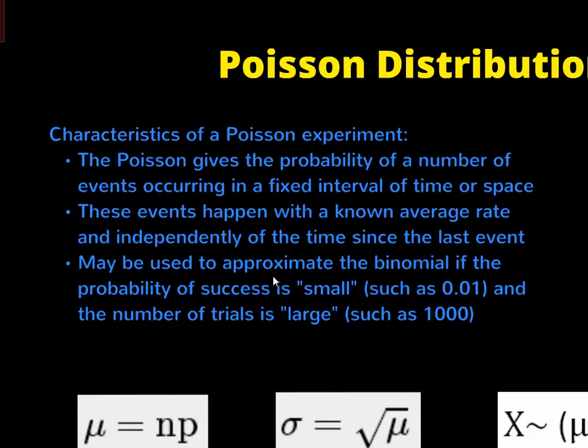As they get larger, we can approximate binomial if the success is small, tiny, and the trials are large. So we have to have a large number of things and a small number of successes. We can use the binomial distribution. But it has its own distribution. It's on the calculator. I'll show you how to set it up.